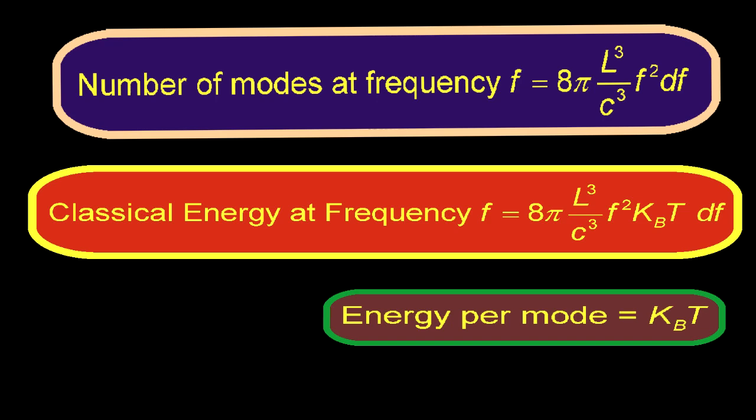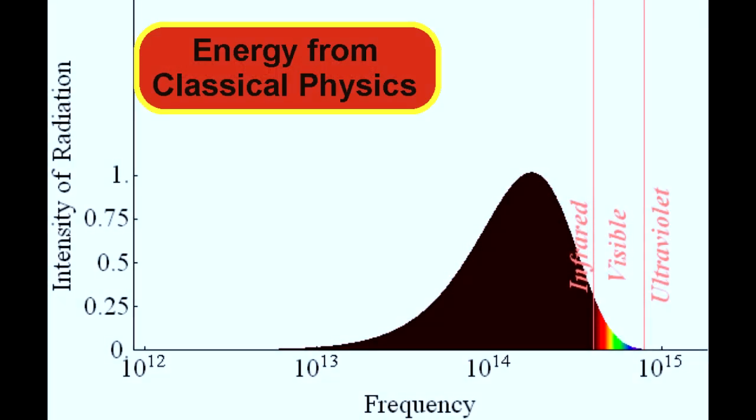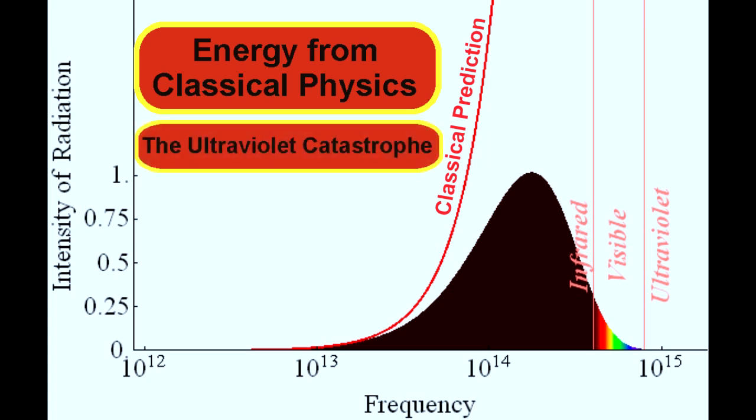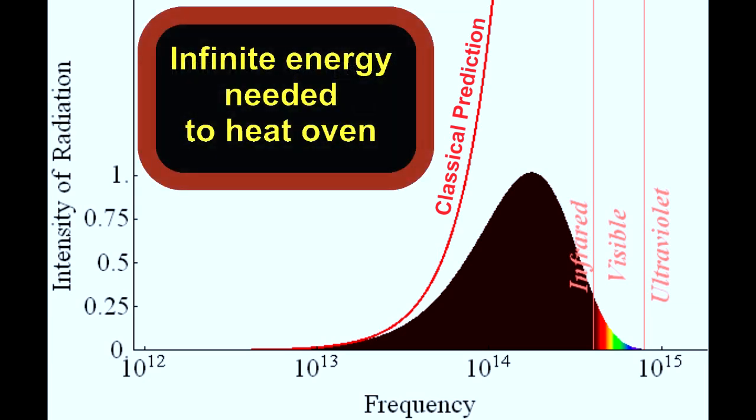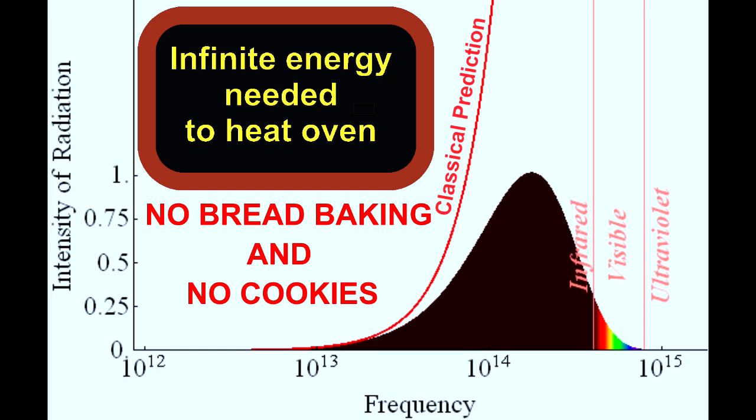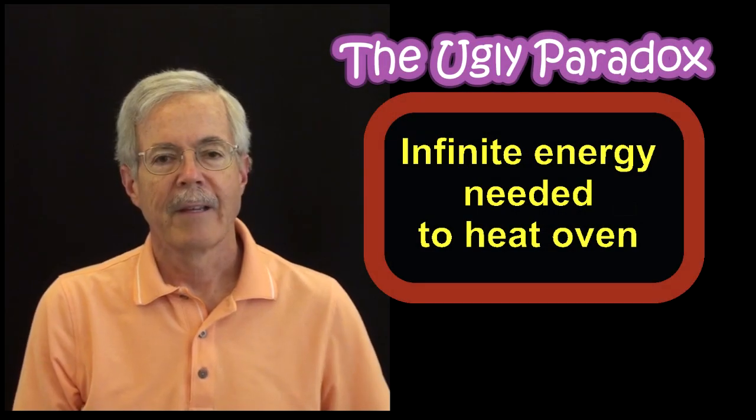It looks like just another formula until you visualize the consequences. Here's a graph of the formula laid on top of the blackbody experimental data. There's a big mistake. The energy soars to infinity. At high frequency, it just keeps rising and never comes back to zero. The popular phrase for this is the ultraviolet catastrophe, but I like a more mundane explanation. The classical formula says that an infinite amount of energy is needed to heat up an enclosed space. In other words, you can never bake bread in an oven.